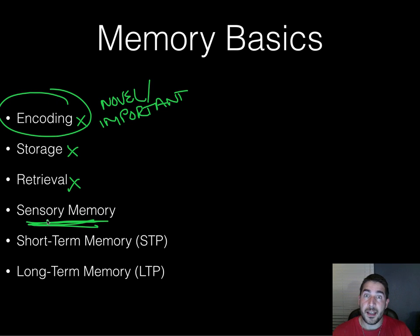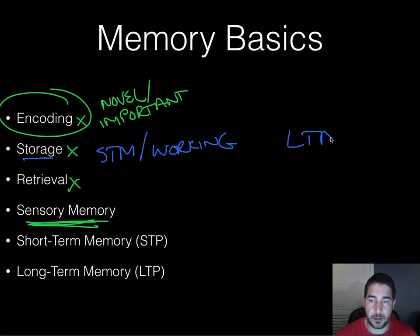Sensory memory is fleeting. It can be any one of your senses. When I say sensory, I'm talking about your five senses: sense of touch, sound, hearing, sight, all these different things. And if it's important or novel, then you're going to start to encode this information. You encode this information and finally you're going to turn that information and store it somewhere. You're going to store it in what's called your short-term memory or your working memory, or you're going to store it in your long-term memory, which we see here. I put STP and LTP. It should say STM and LTP down here.